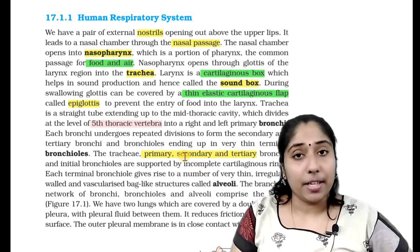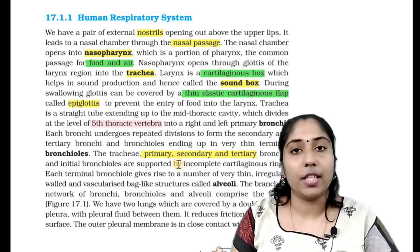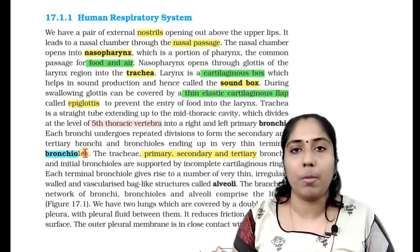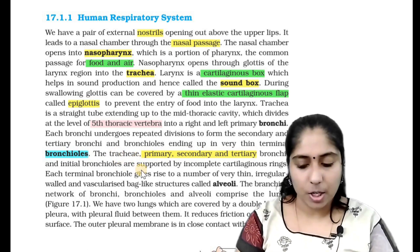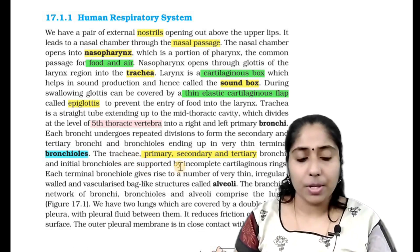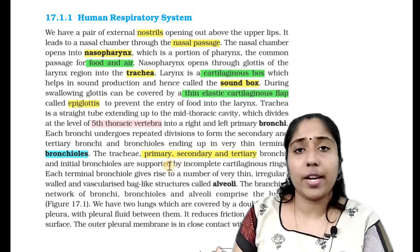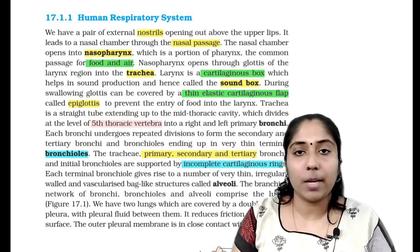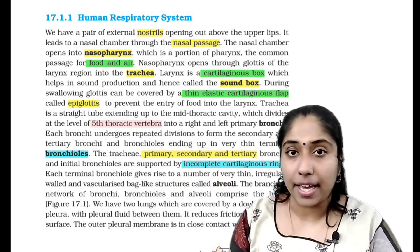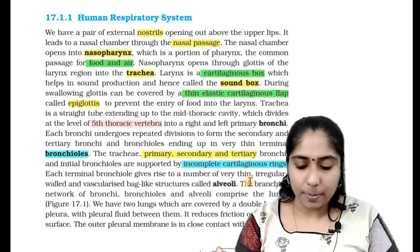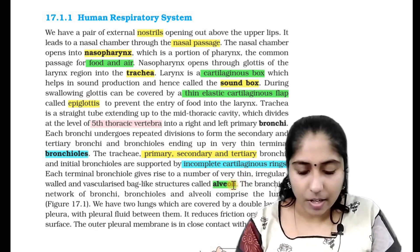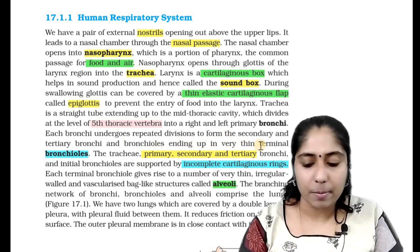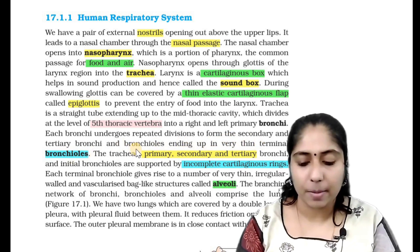Tertiary bronchi divide into bronchioles, then initial bronchioles, and then terminal bronchioles. Each terminal bronchiole is attached to an irregular-shaped vascularized bag. That irregular-shaped bag is called alveoli. Each bronchi undergoes repeated divisions to form secondary and tertiary bronchi and bronchioles, ending up in very thin terminal bronchioles.